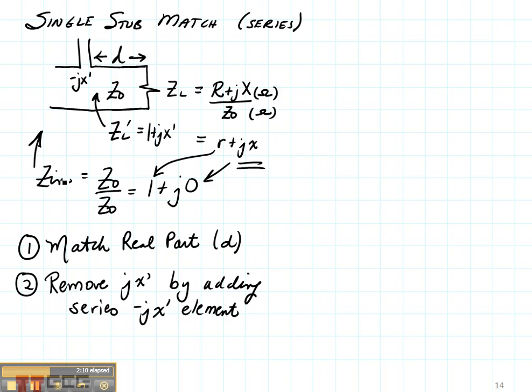What that means is that z in is going to be zl prime plus z of the stub, and that's going to be 1 plus jx prime minus jx prime, which gives us 1 plus j0, which is the input impedance that we wanted.